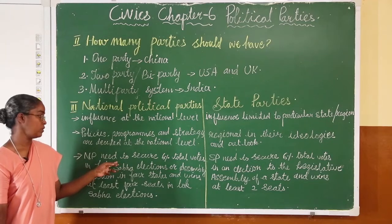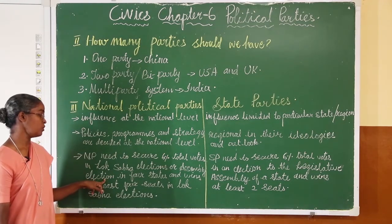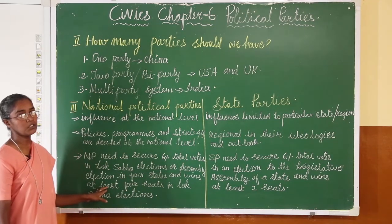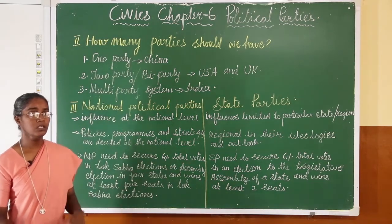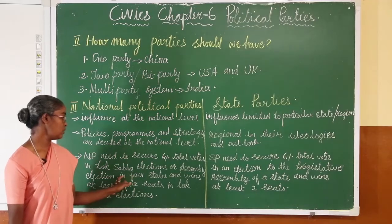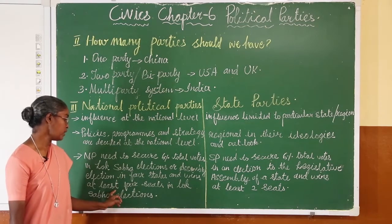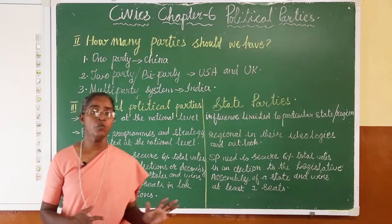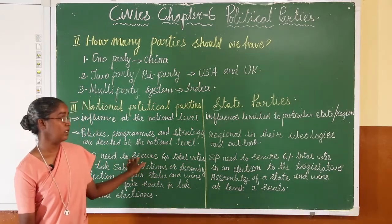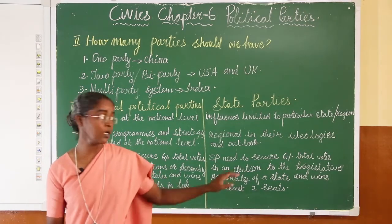For a national party, they also need to secure 6% of total votes, but in the Lok Sabha elections as well as in assembly elections in 4 states, and they must win at least 4 seats. Their presence should be in more than one state. In contrast, a state party's presence is only in a single state. So when a party wins 4 seats in 4 states and 6% of total votes in a general election, it is recognized as a national party. When a party wins 6% of votes in state assembly elections and two seats in a state, it is recognized as a state party.